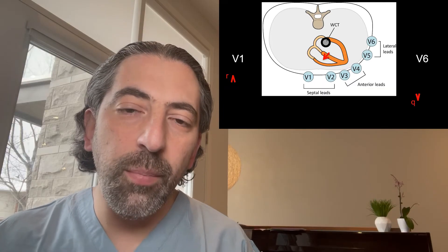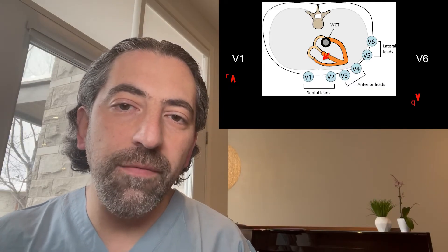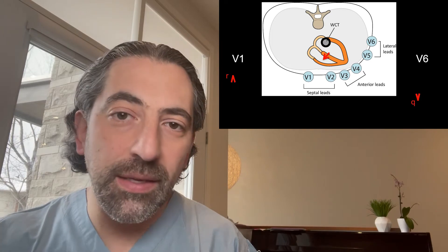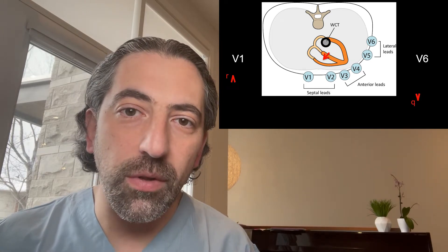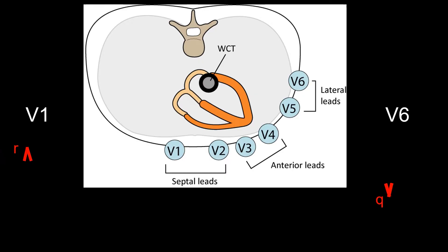After that, depolarization of the left ventricle proceeds as per normal because the left ventricle is still depolarizing through the His-Purkinje system via the left bundle. So you'll get a normal s wave in lead V1 and a normal r wave in lead V6.